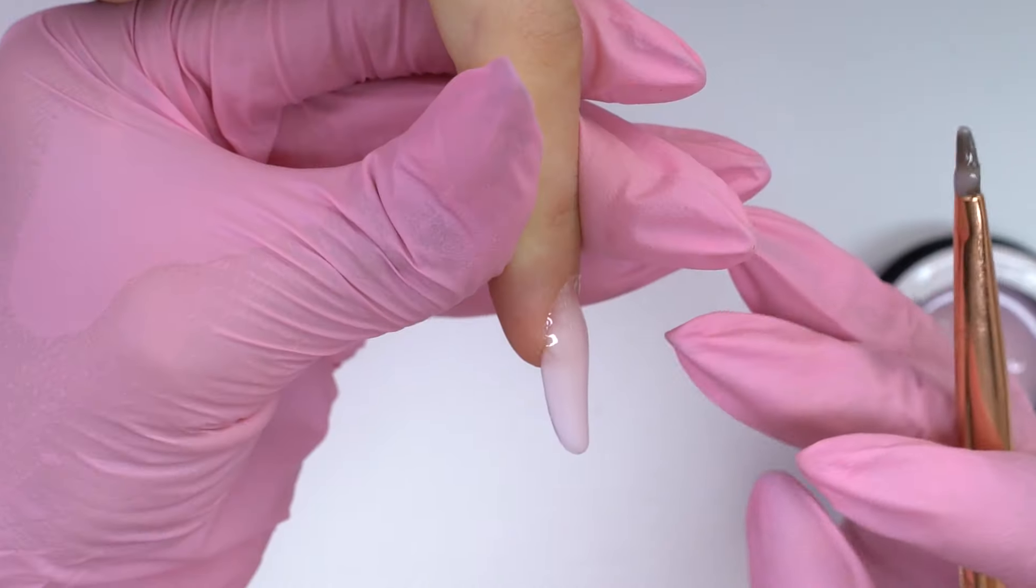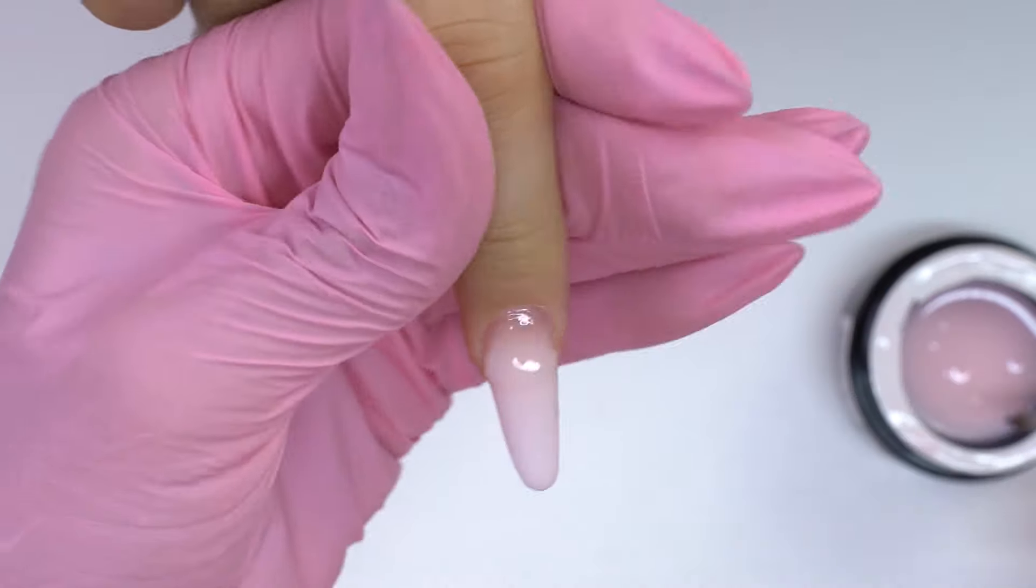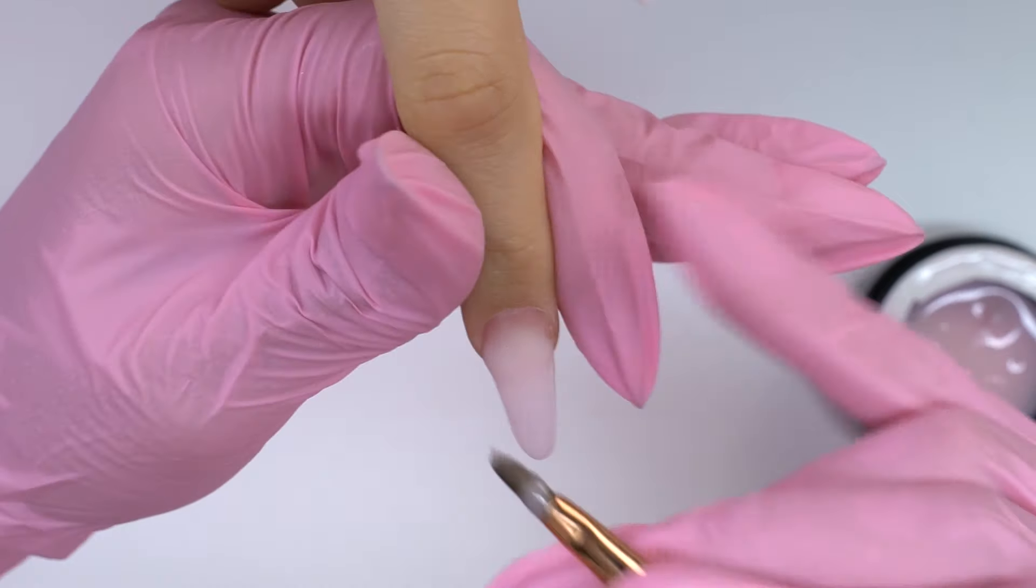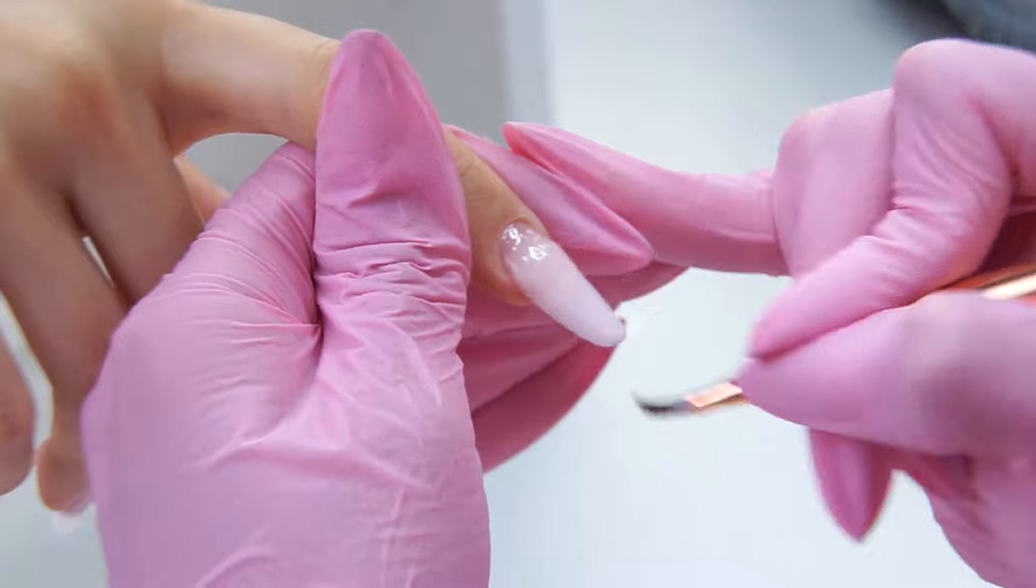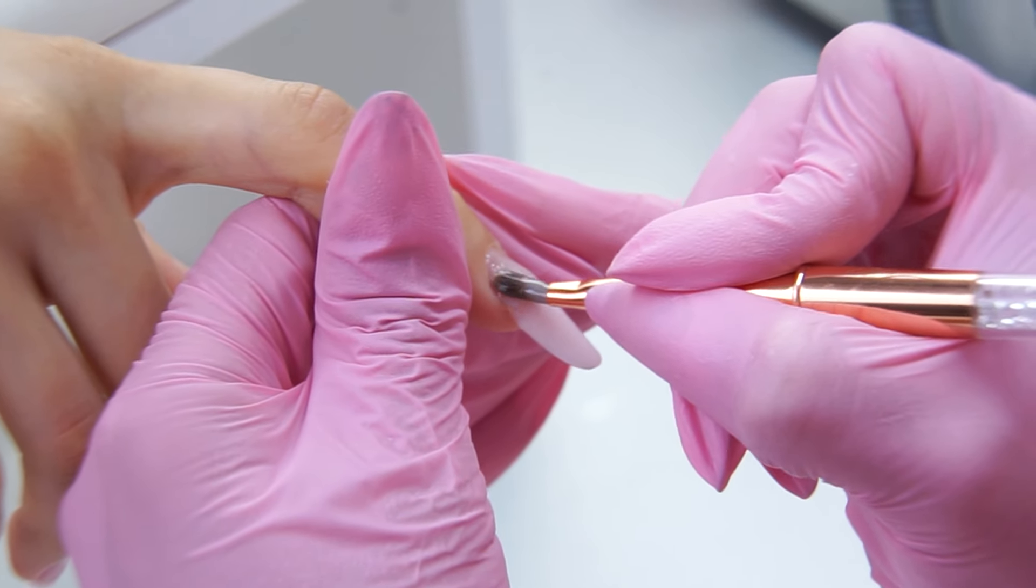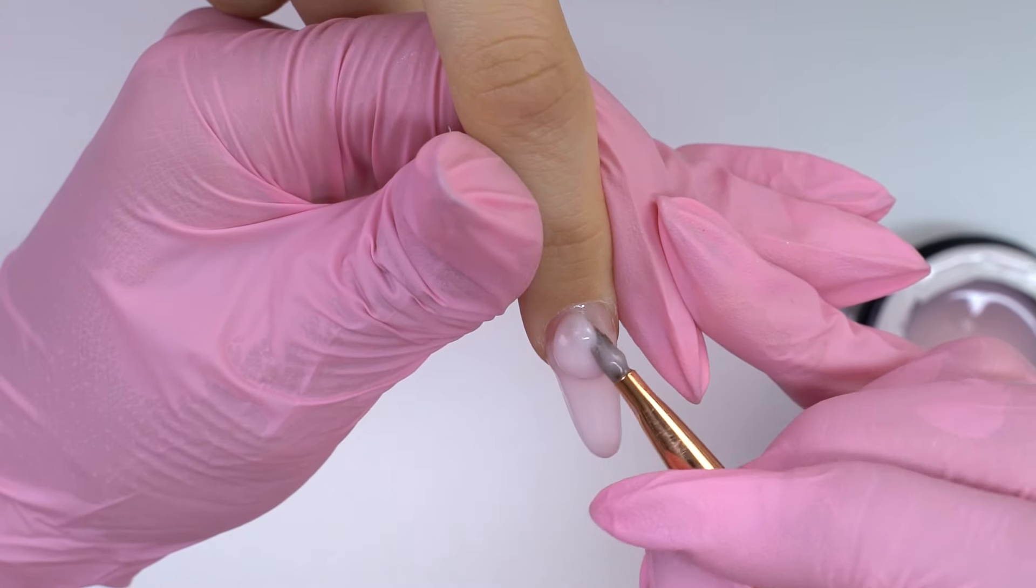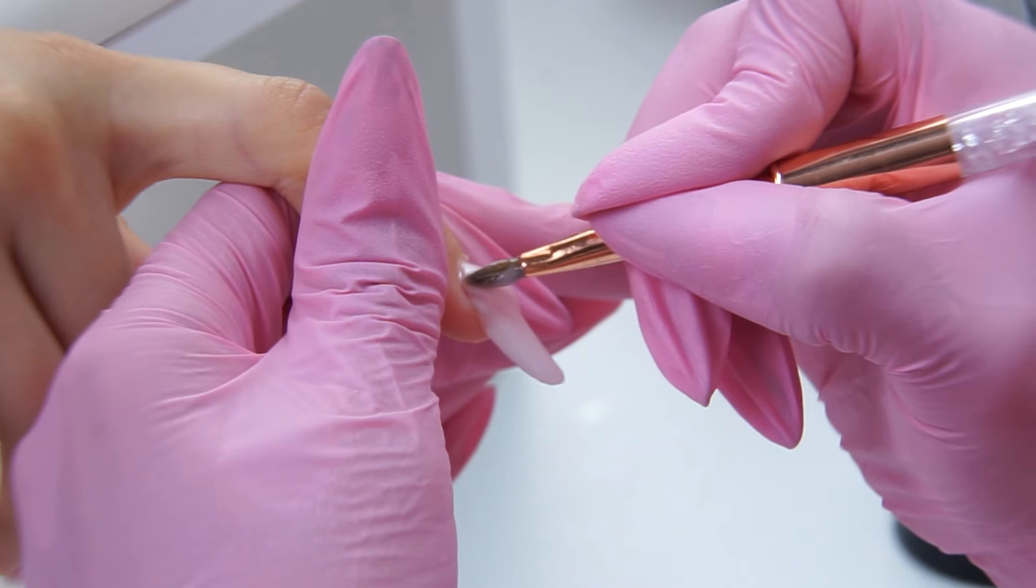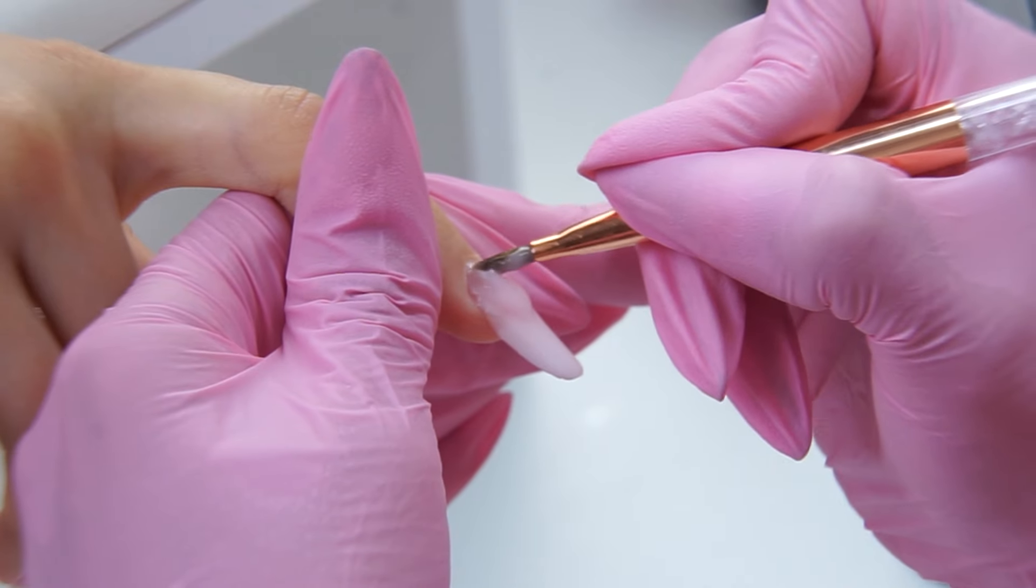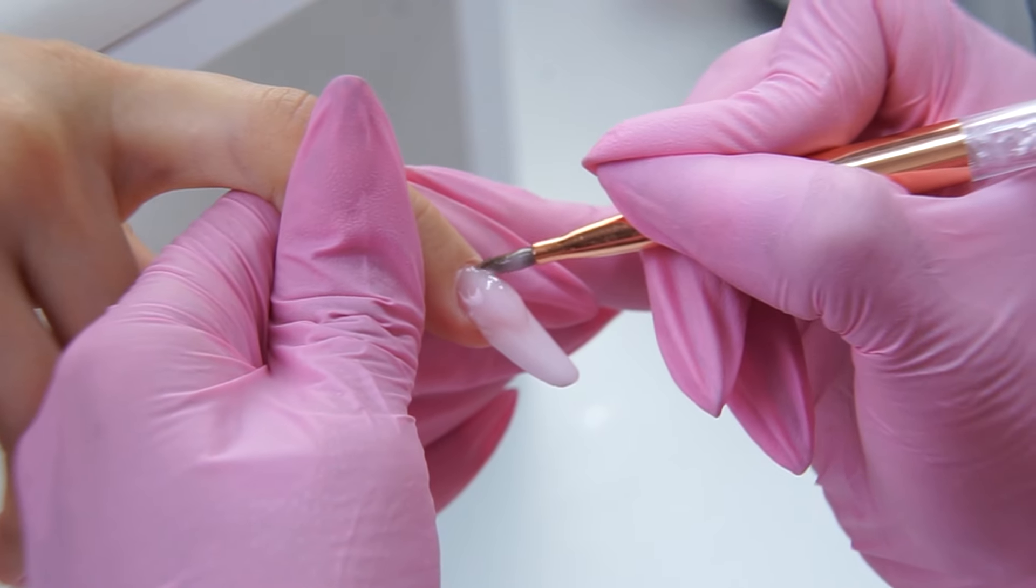And now I need to build up the cuticle zone. Why can't we do it with one drop? Well, firstly, a thick layer would burn the client's nail plate badly. And secondly, it is hard to control such a thick layer. And it will flow everywhere. So, using two drops is safer.